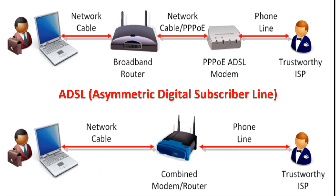ADSL facilitates fast data transmission at a high bandwidth on existing copper wire telephone lines to homes and businesses. It can transmit downstream to the user and only a small part for uploading information from the user. It simultaneously accommodates voice information and data on the same phone line.